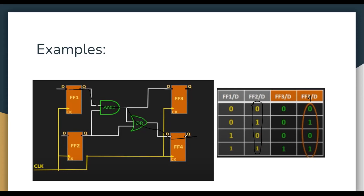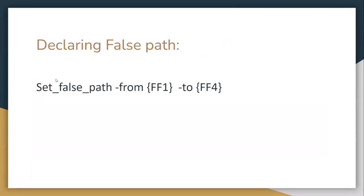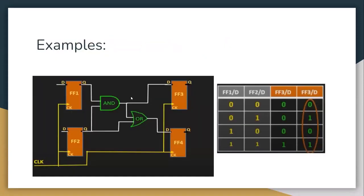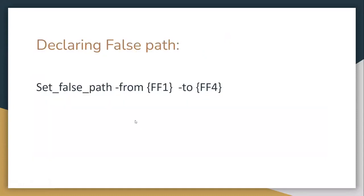How can we eliminate this false path? There is a proper syntax for it. The path is from flip-flop 1 to flip-flop 4, and we declare it as set_false_path. This is the syntax: declare the from and to endpoints — from flip-flop 1 to flip-flop 4.